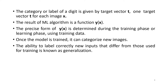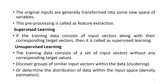Once the model is trained, it can categorize new images. The ability to correctly label new inputs that differ from those used for training is known as generalization. The original inputs are generally transformed into some new space of variables. This preprocessing is called feature extraction.